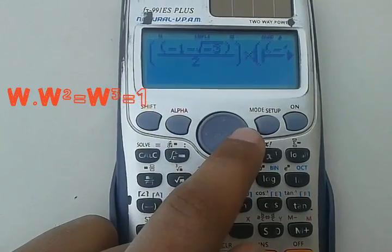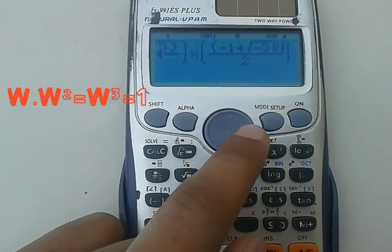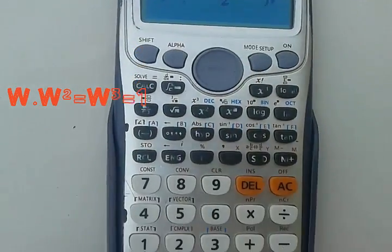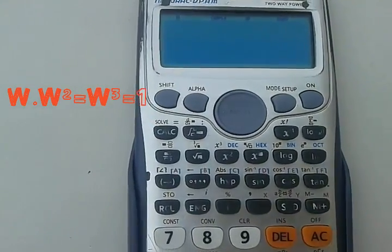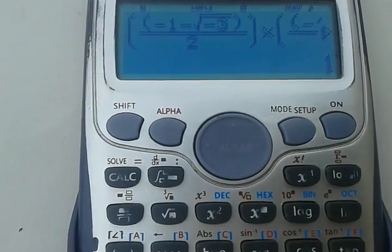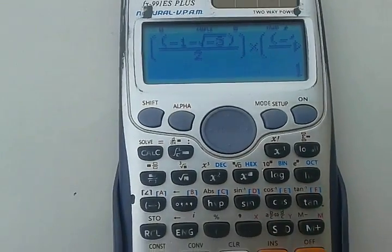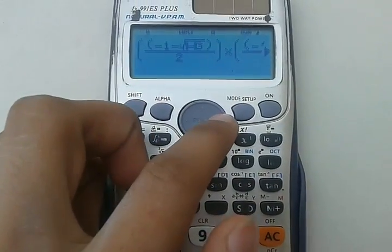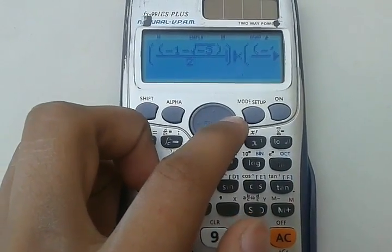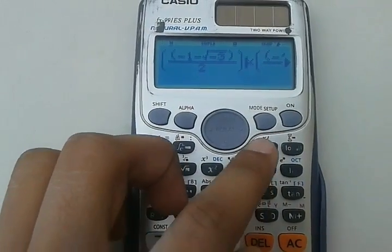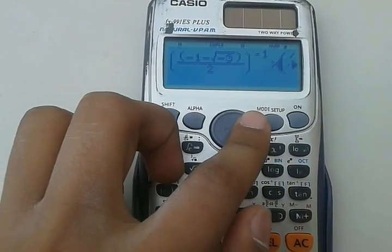Omega times omega square equals omega cube, and is equal to 1. The product of omega inverse and omega square inverse also gives 1.